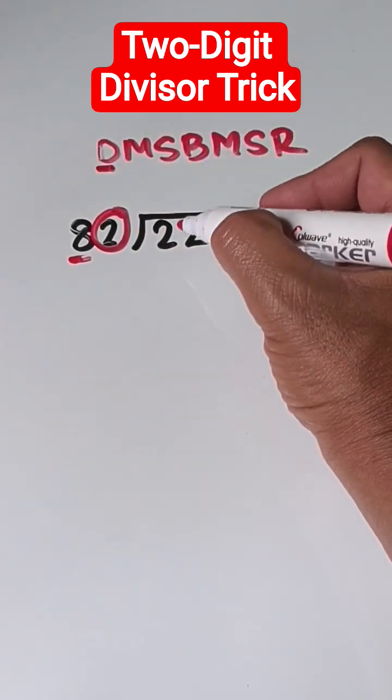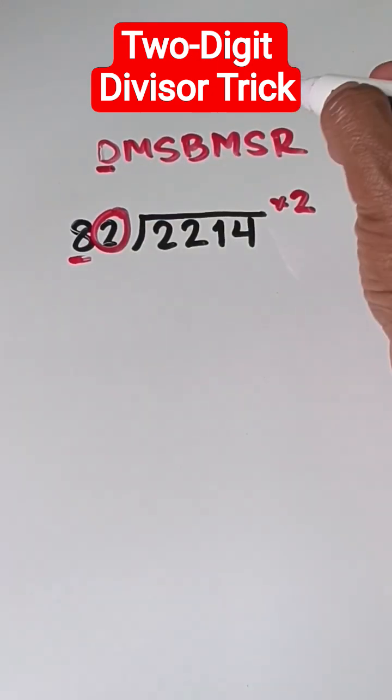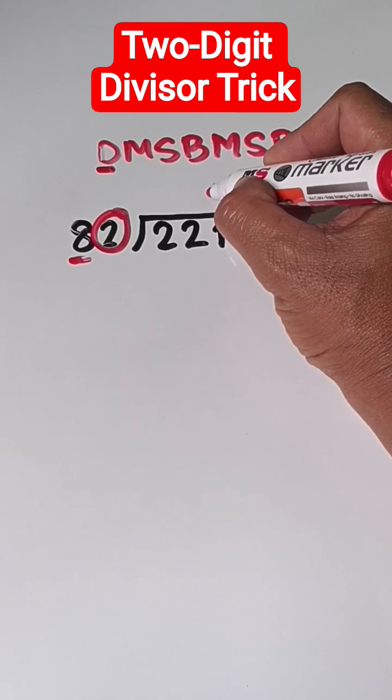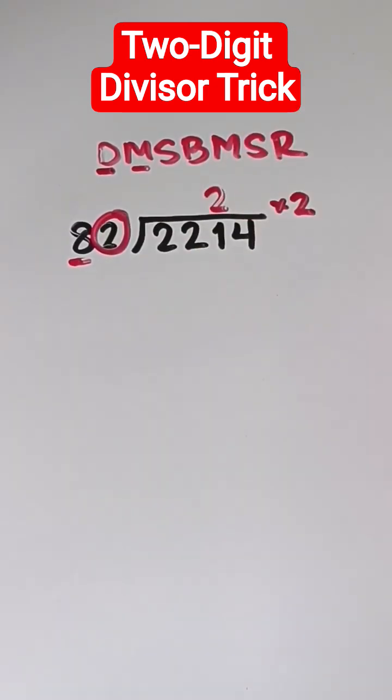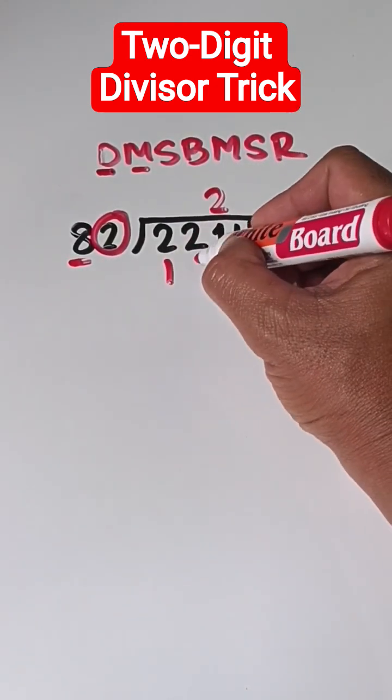Let's start to divide. 22 divided by 8, that is 2. So, we write 2 on the third digit. Then, multiply. 2 times 8 is 16. So, we put it below 22.